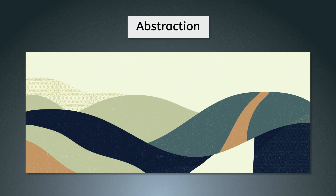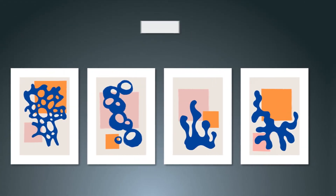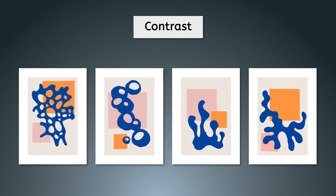Abstraction. Artists also use organic shapes as an abstraction from reality to create more expressive, dynamic, and sometimes non-representational artworks. Contrast. Artists use organic shapes to contrast with geometric shapes in order to create more dynamic compositions, and to show the contrast between the natural and the man-made world.